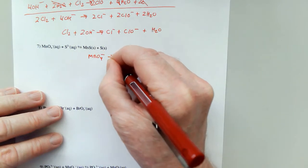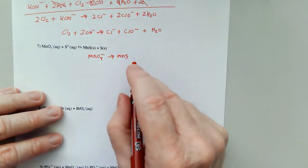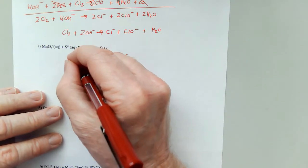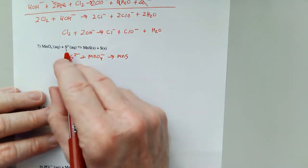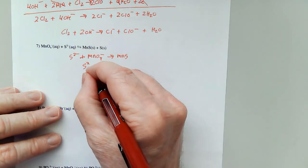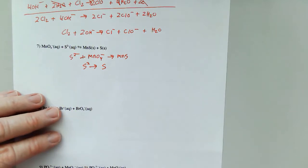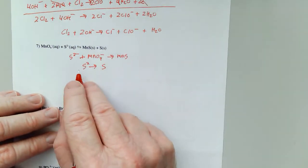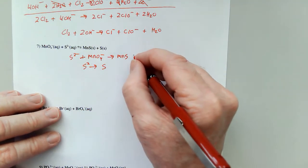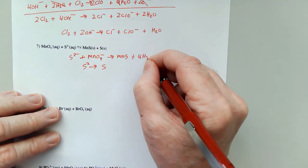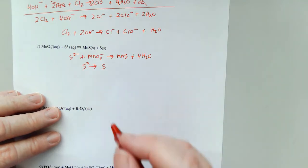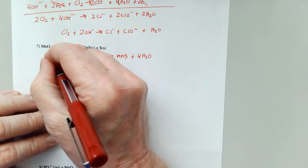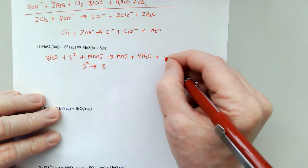MnO₄⁻ gives me MnS. I'm going to need sulfur, so I'm going to put in this S²⁻ also. And then S²⁻ goes to S as a solid. Manganese, manganese, sulfur, sulfur, sulfur, sulfur. Four oxygens, so I add four waters. Two times four is eight, so I'm going to add eight waters and eight hydroxides.